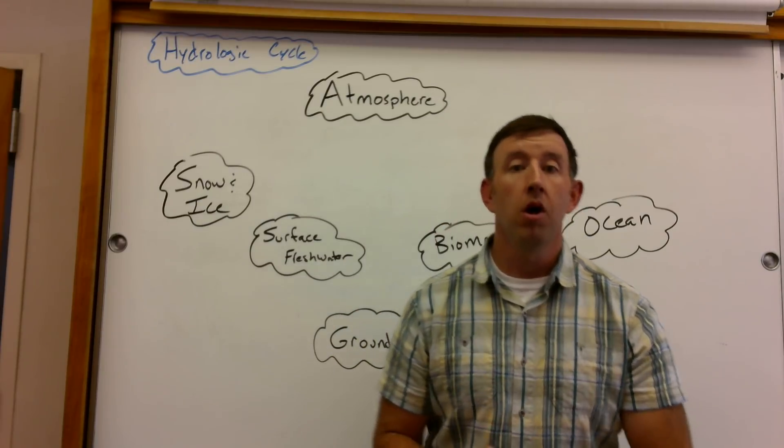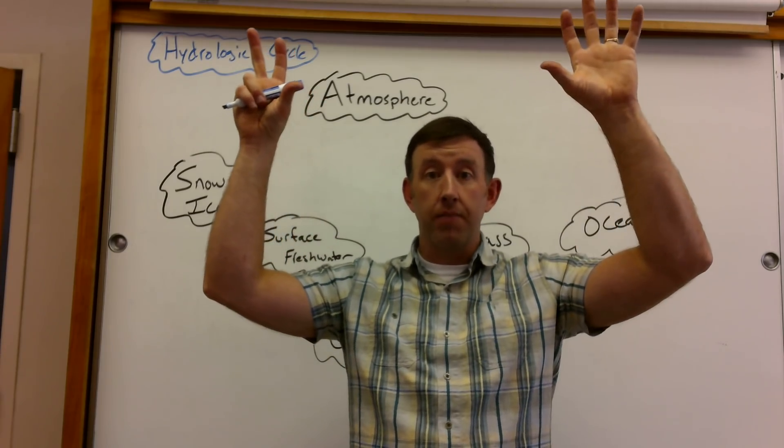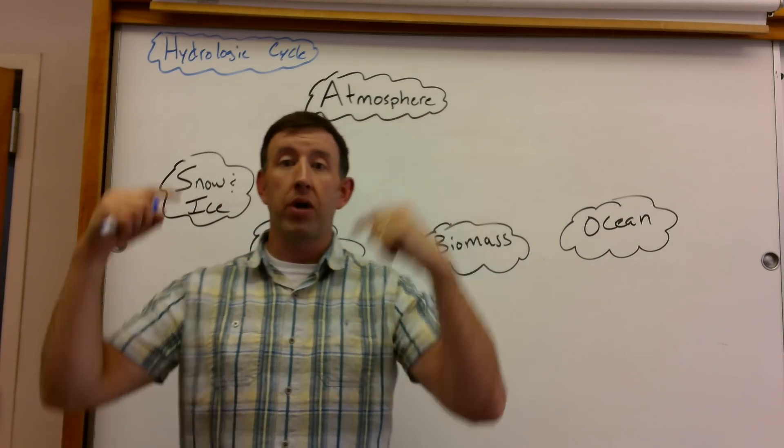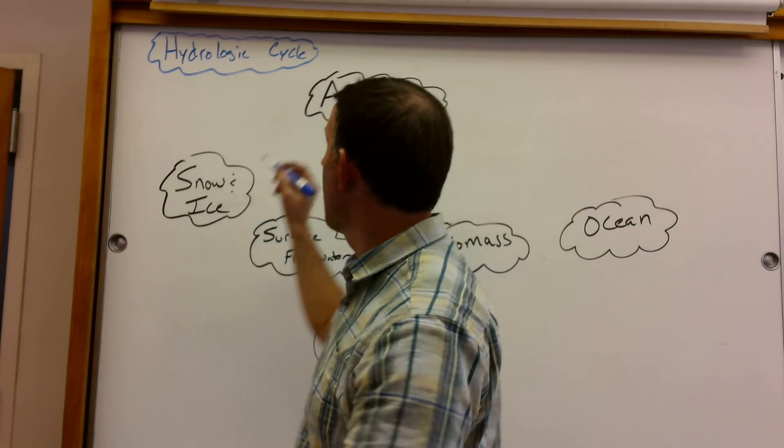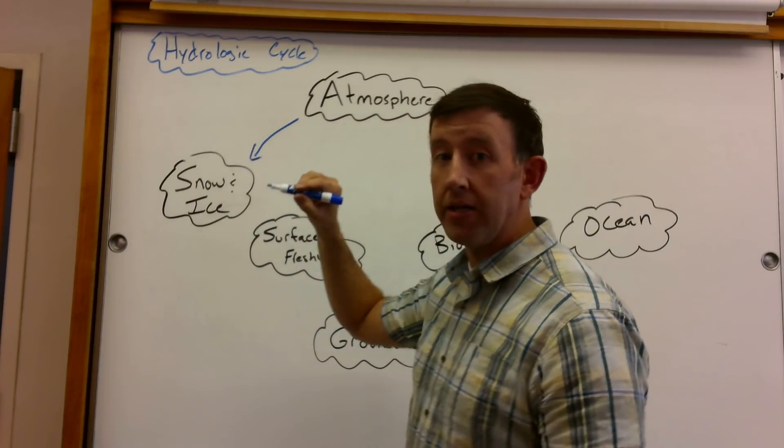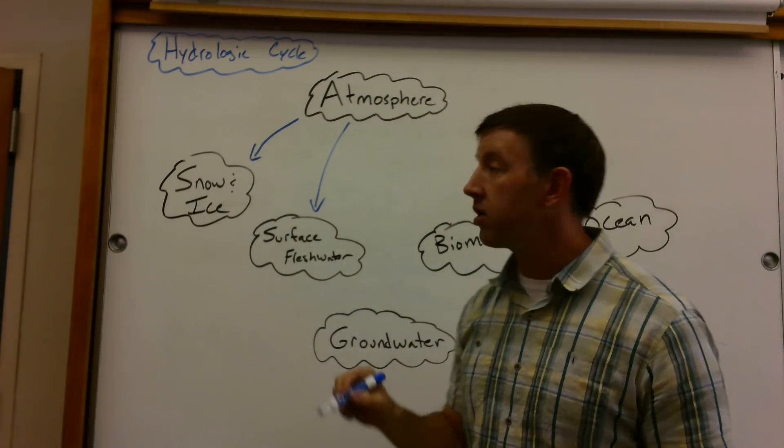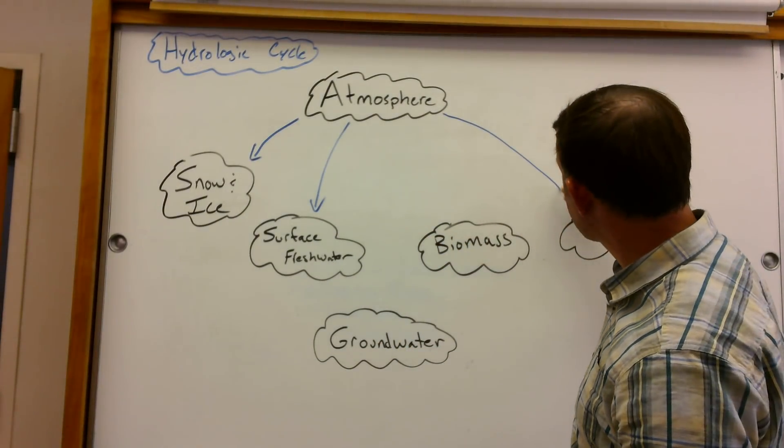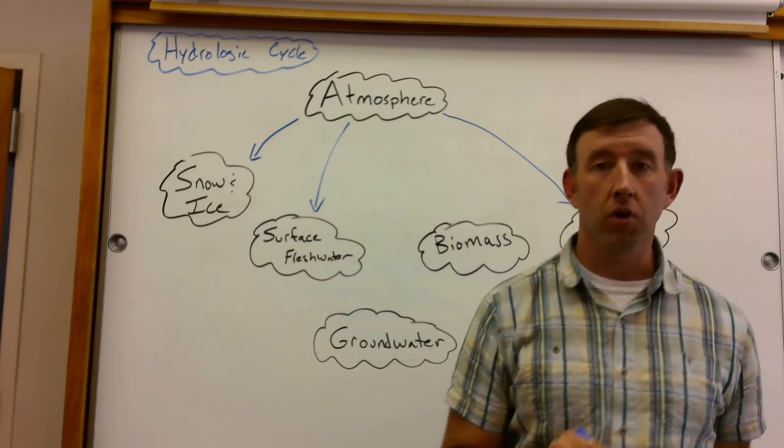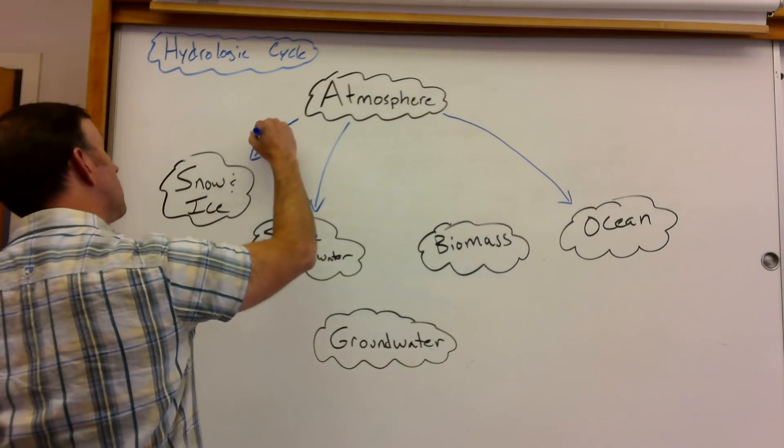So first of all, like we did with carbon and nitrogen, we'll just begin with water in the atmosphere. I'll talk about the processes that move it around. So as you know, atmosphere can contribute water to snow and ice or directly to surface fresh water or directly back to the ocean. So we call that, of course,